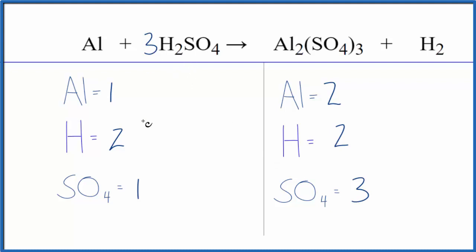Now we'd have two times three, that would give us six hydrogen atoms, and then one sulfate times three, that would give us three sulfates. The sulfates would balance.